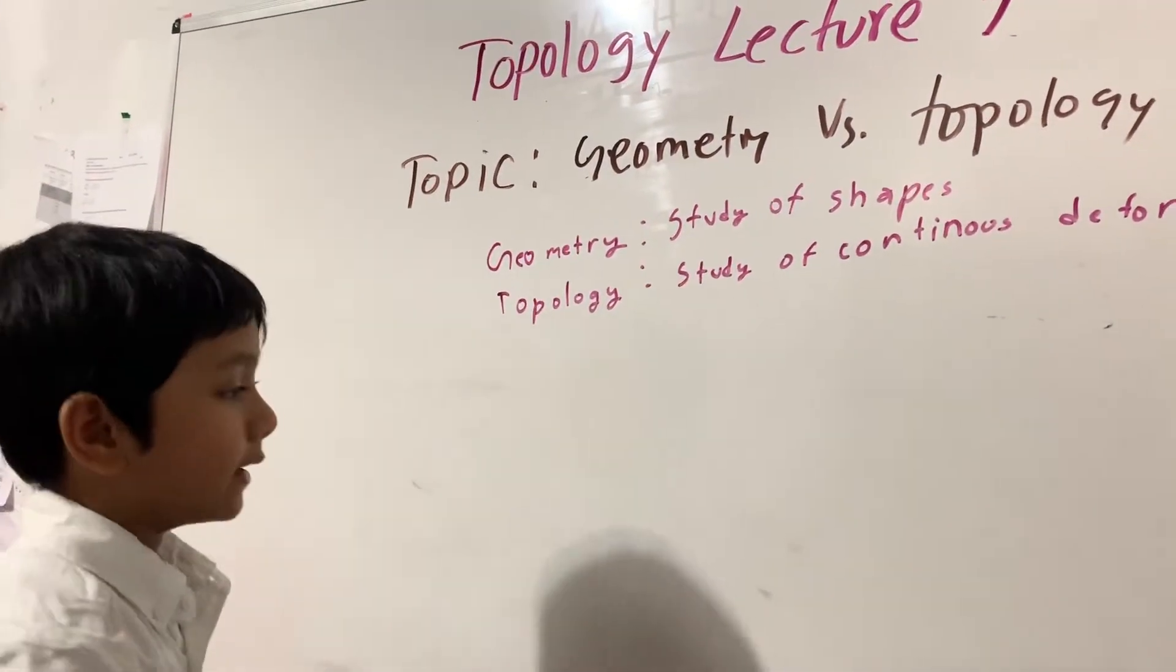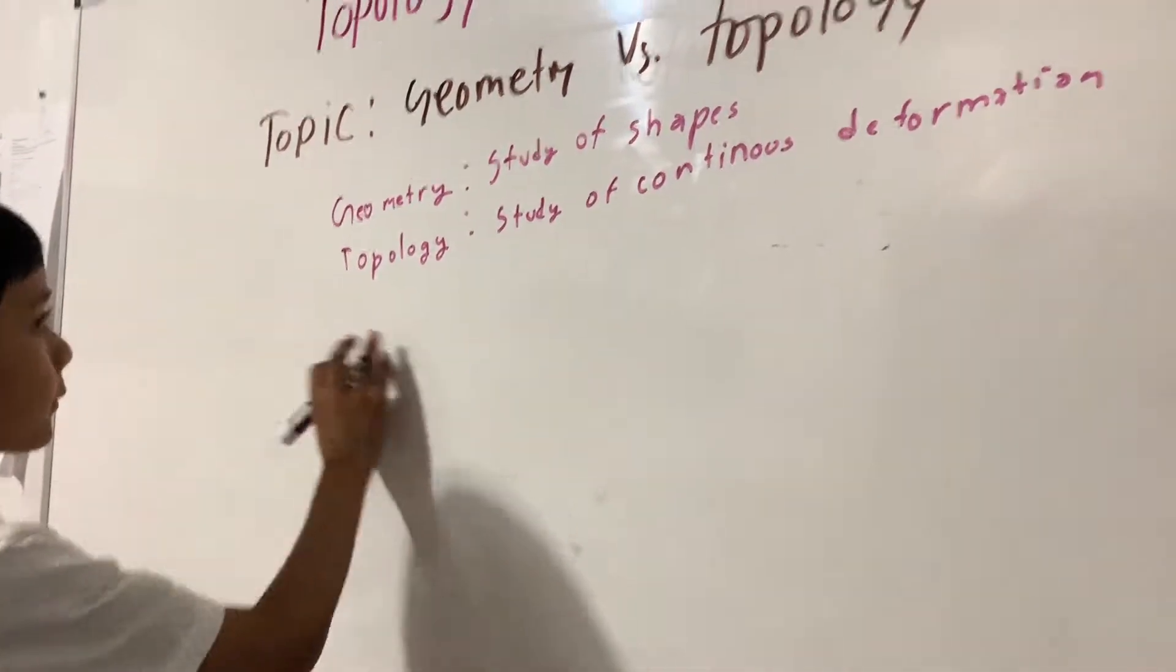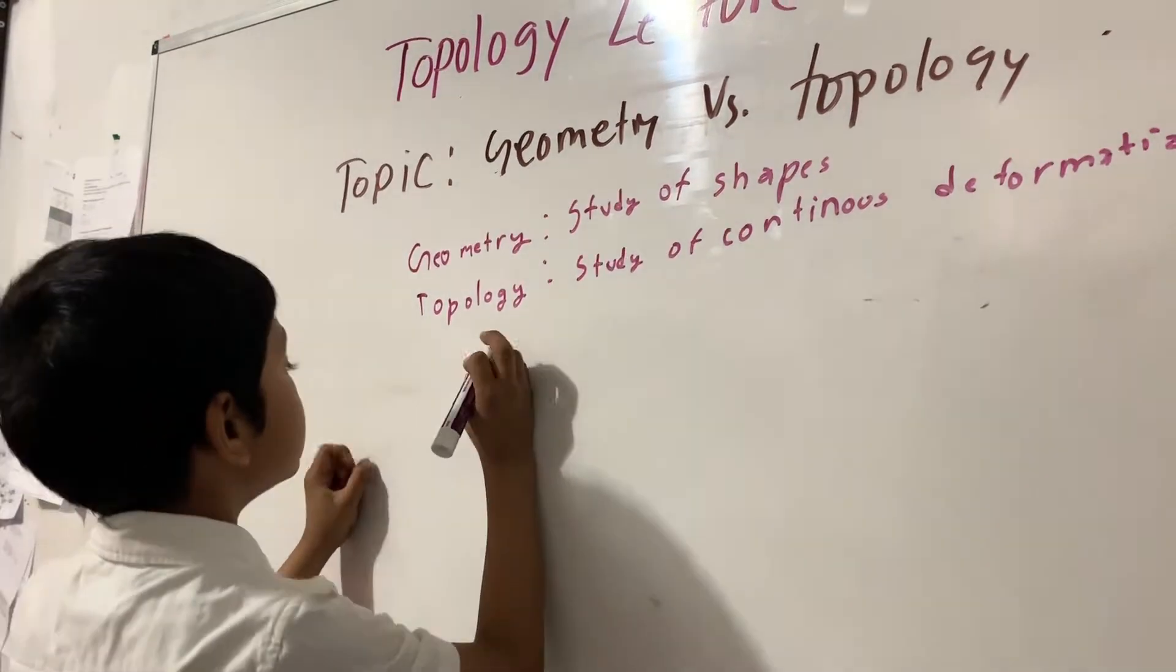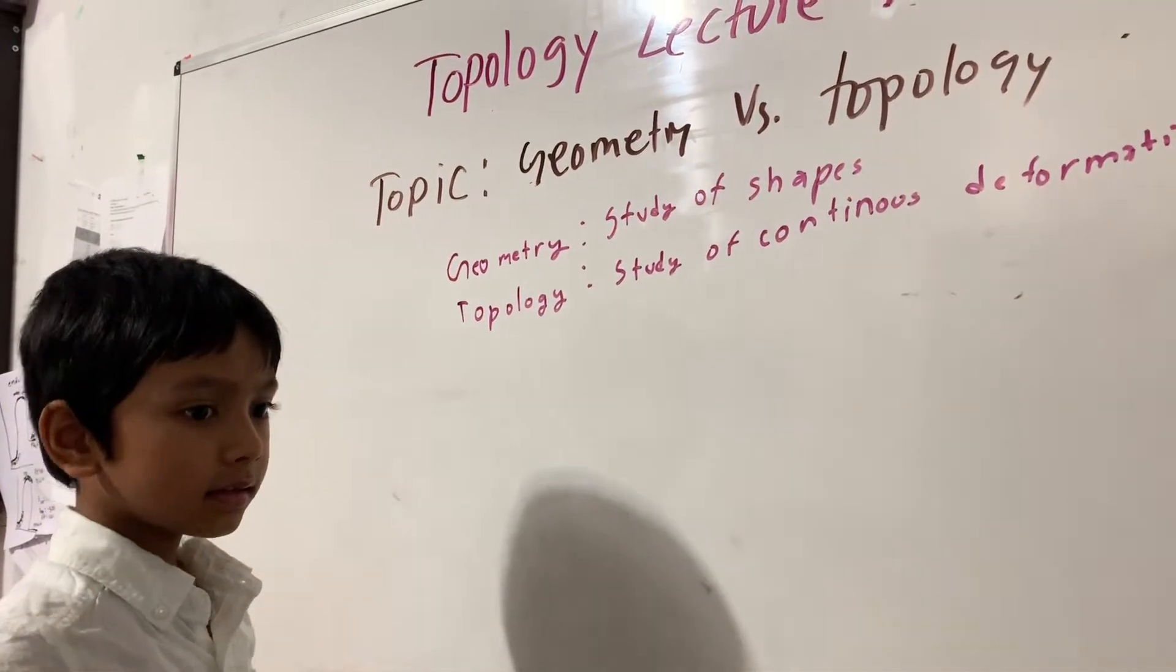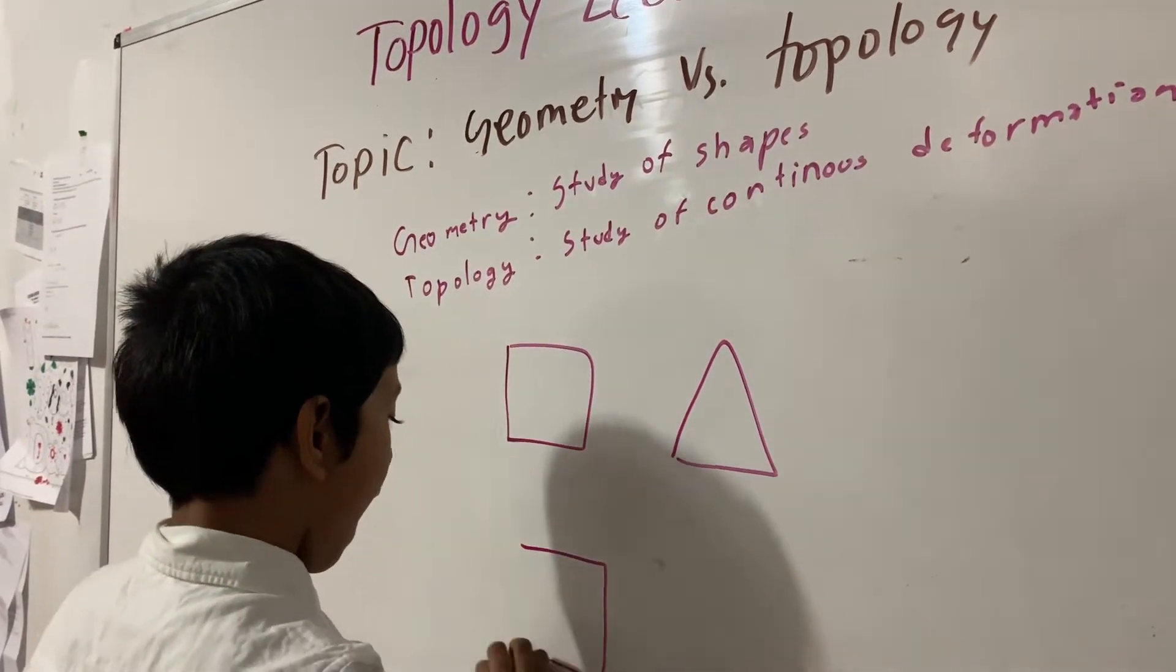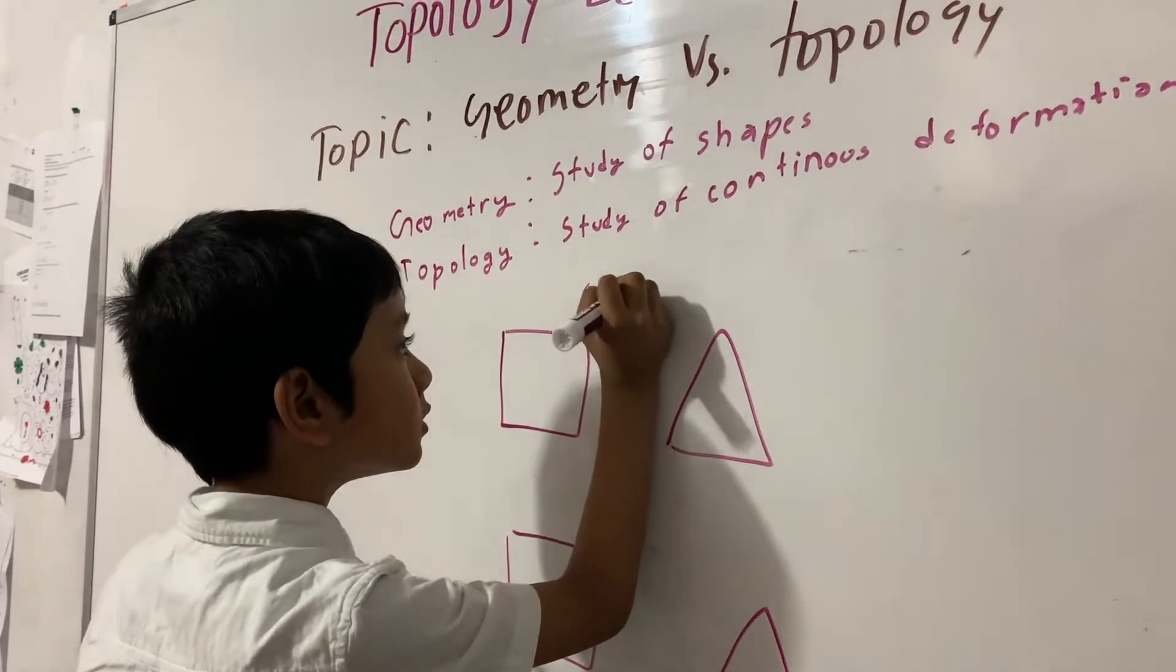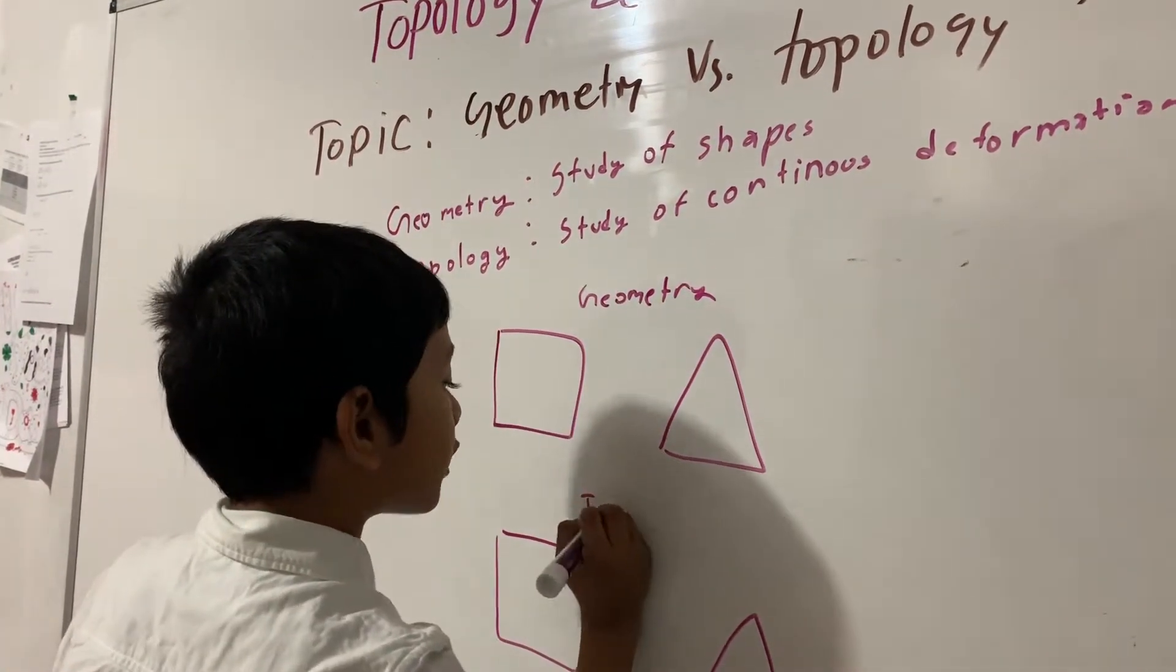Okay, now let's start with the actual differences. So, let's say we have two shapes in both studies, in both geometry and topology.